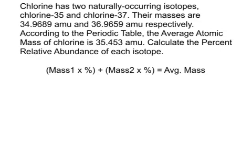You remember that what we've been using so far was this formula: we take the mass of the first isotope, multiply it by its percent abundance, and then add it to the product of the second isotope's mass multiplied by its percent abundance, and we get the average mass.